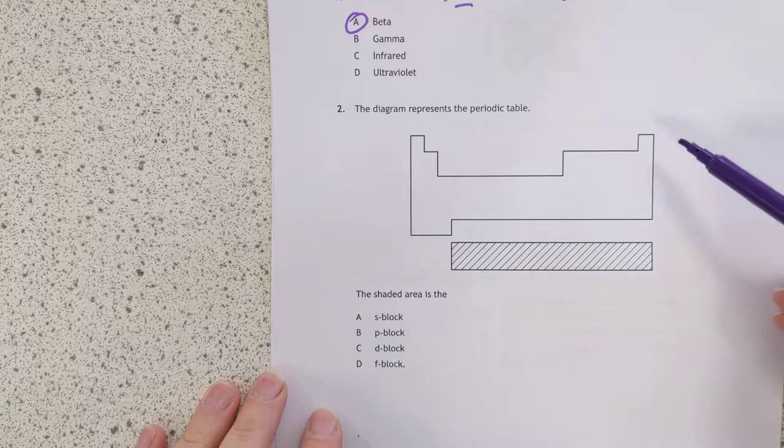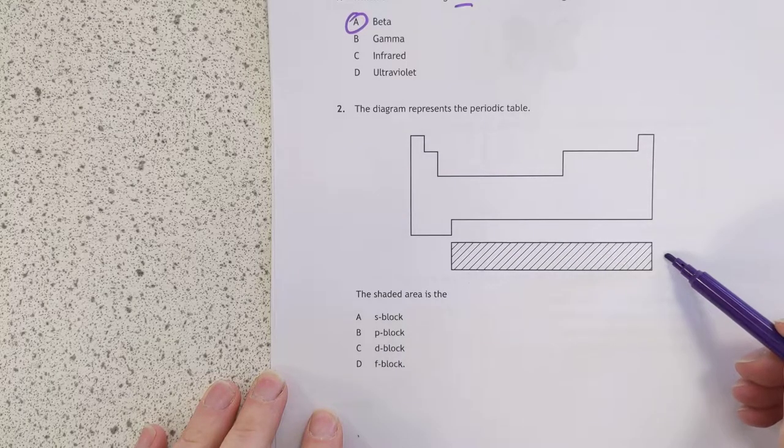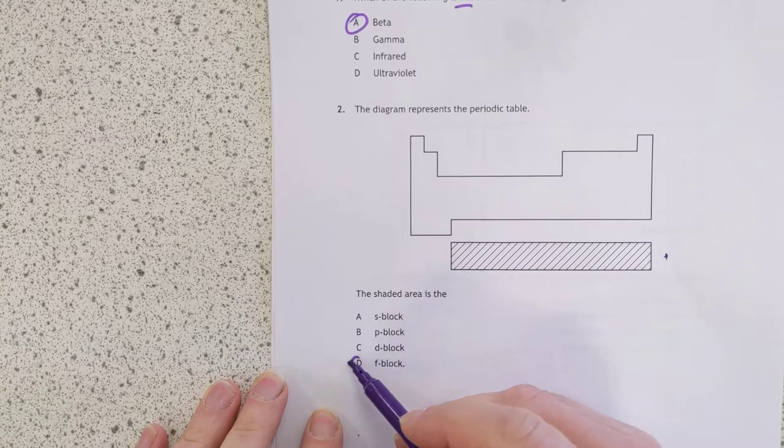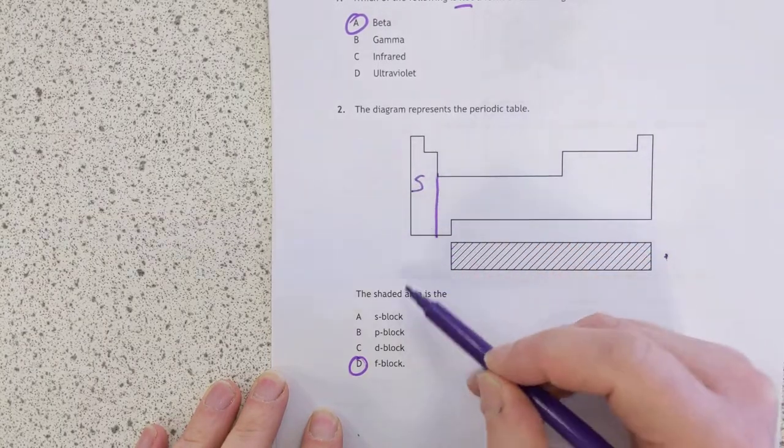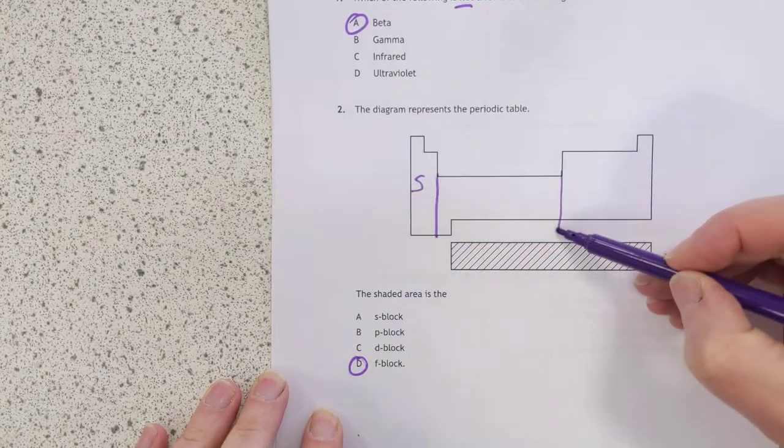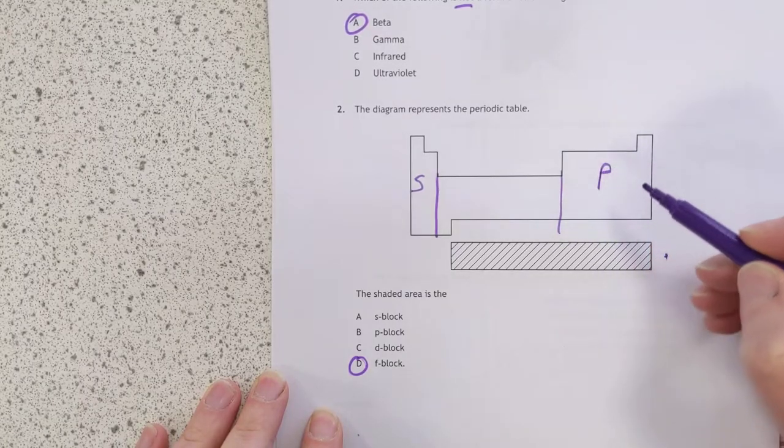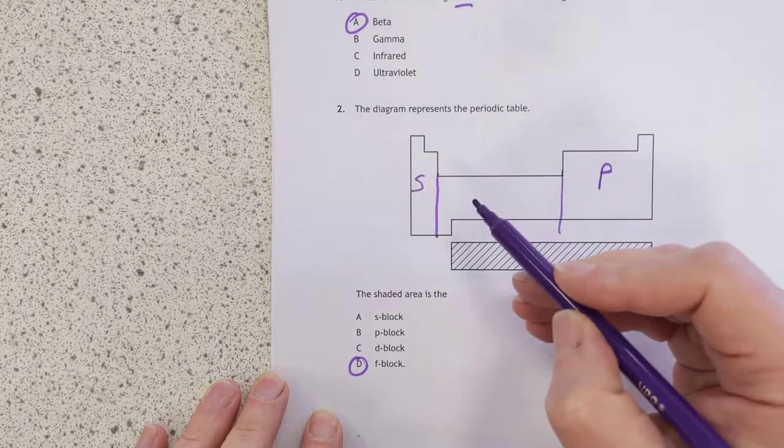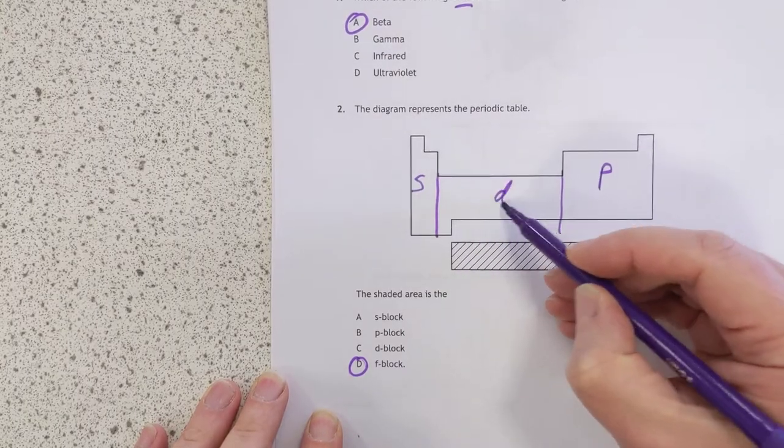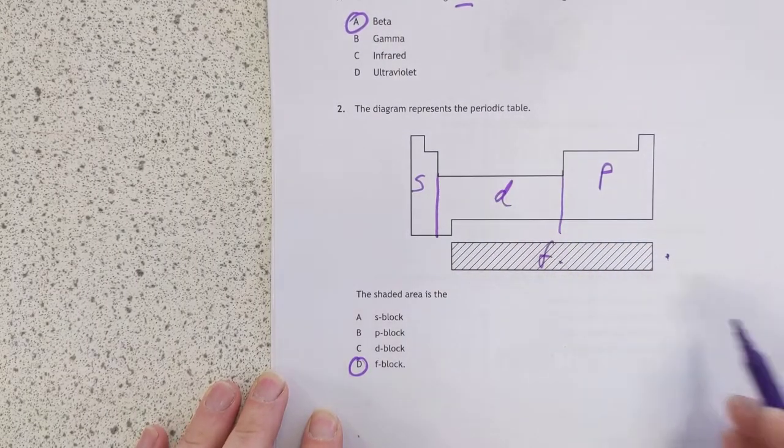Number two, diagram represents period table. This, basically, that's just know-it time, it's the F block. The reason being that the first two columns are filling the S orbitals, S1 and S2. These six columns here are filling the P orbitals, that's why there's six of them of course, because you can put six electrons. And these ten columns are filling the Ds, so we're left with the Fs for these, that's why there's fourteen.